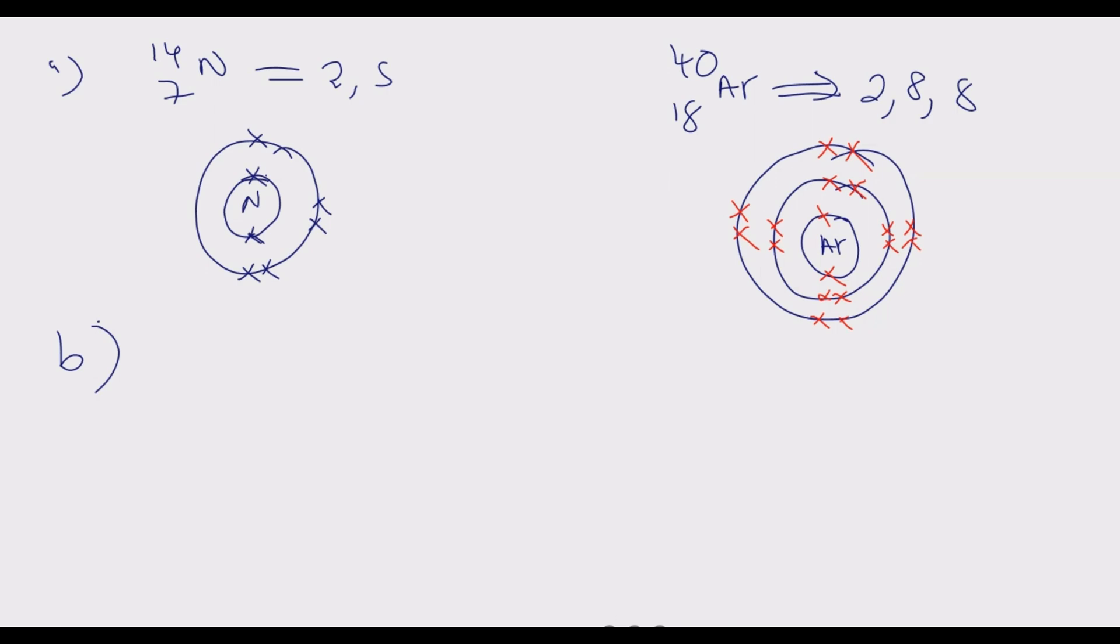The number of electrons in the outer shell determines the group. If you look at nitrogen, it has 5, so it belongs to group 5. Argon has 8 in the last shell, so it belongs to group 8 or group 0. Secondly, what determines the period in which a given element belongs is the number of shells present in a particular atom. In this case, two shells are found in nitrogen, so nitrogen belongs to period 2. This one has 3 shells, so it belongs to period 3.